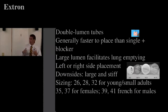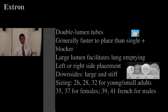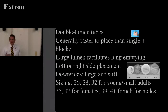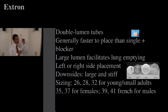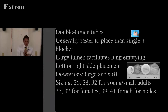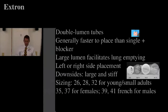Double lumen tubes also help to empty the lung, which is the biggest thing the surgeon complains about: 'Get the lungs down.' With a COPD patient who can't empty their lungs, a double lumen tube gives you a big lumen through which the lung can passively deflate. If you use a bronchial blocker, you've blocked the ability for that lung to deflate at all — there's usually just a tiny port in those.